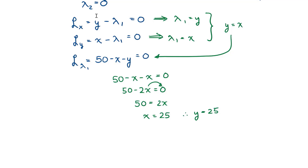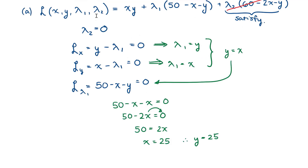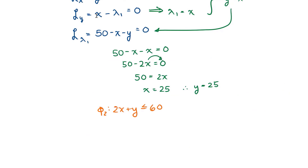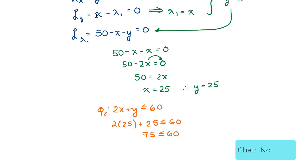This is a solution based on constraint 1. However, I have to check constraint 2 — I need to test the assumption that constraint 2 is naturally satisfied. Substituting into 2x plus y is less than or equal to 60: 2 times 25 plus 25 gives 75, and 75 is less than or equal to 60 is false. Constraint 2 is not satisfied, so we cannot use this solution.